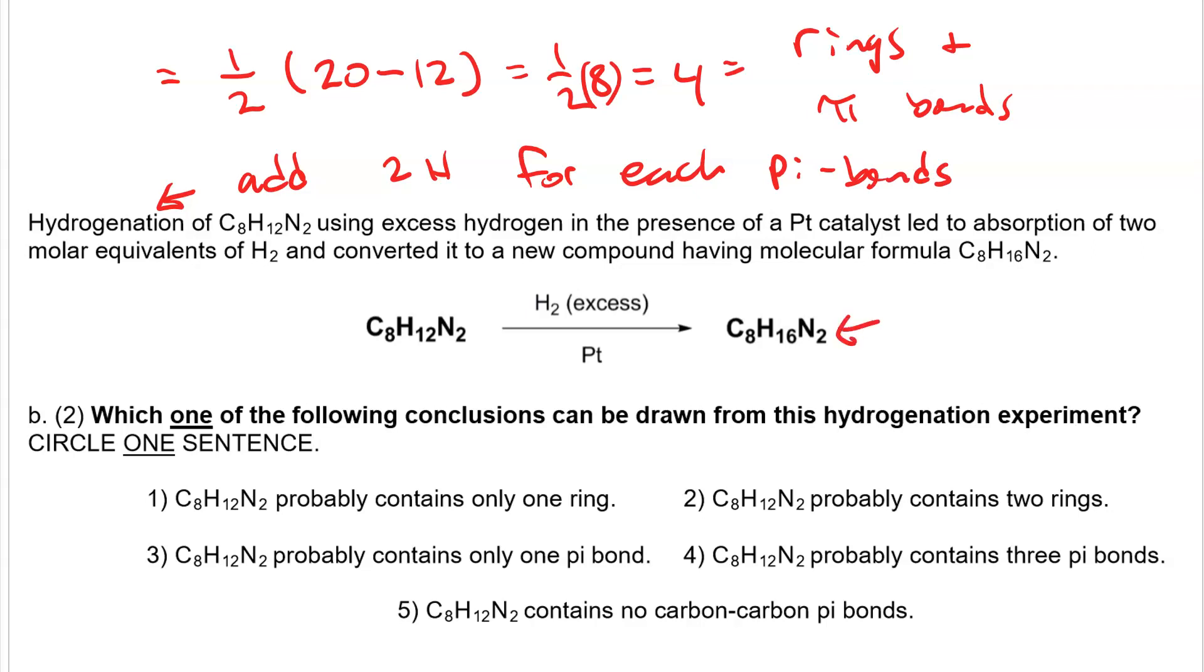So the hydrogenation product has 4 more hydrogen atoms which means there are 2 pi bonds. But our HDI was 4. That means we also have 2 rings. So this is the statement we need to circle here.